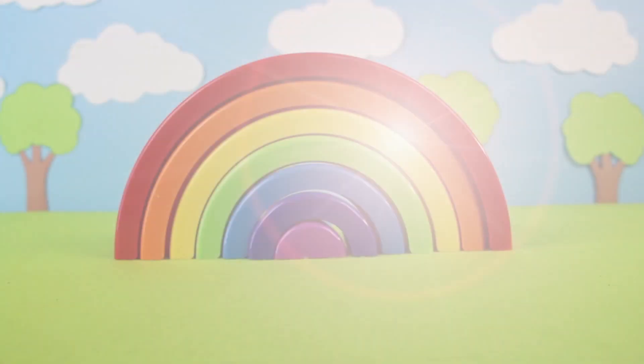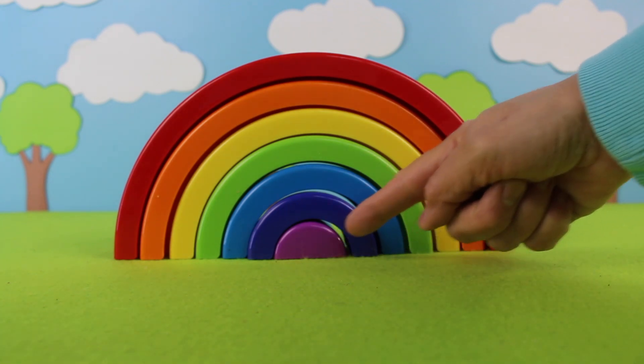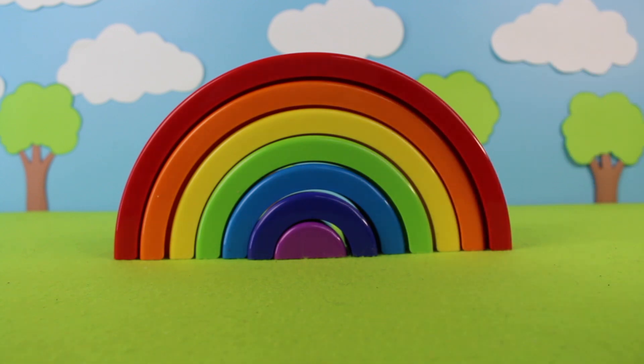Rainbow. How many rings are in this rainbow? Let's count them. One, two, three, four, five, six, seven. Seven colorful rings.